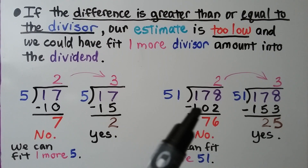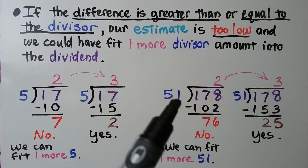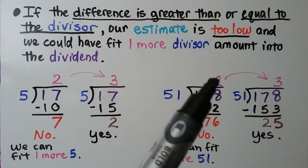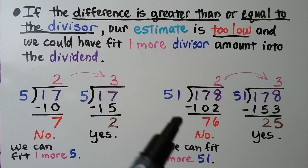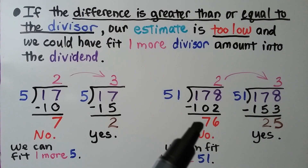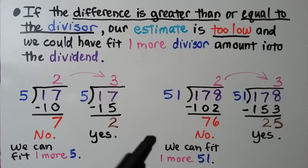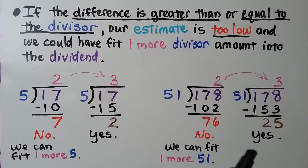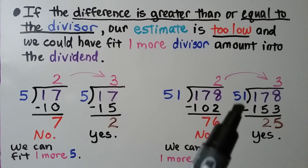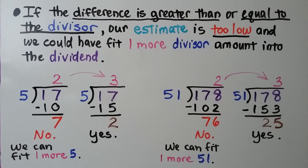If we try 178 divided by 51 with a 2: 51 times 2 is 102, we subtract and get 76 — that's greater than the divisor, meaning we can fit one more 51. So we adjust the quotient to 3. And 51 times 3 is 153; when we subtract we get 25, which is less than the divisor. So be careful: if your estimate is too low, you might be able to fit one more divisor amount into it.